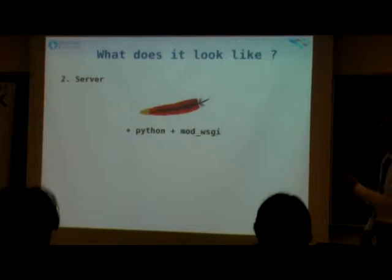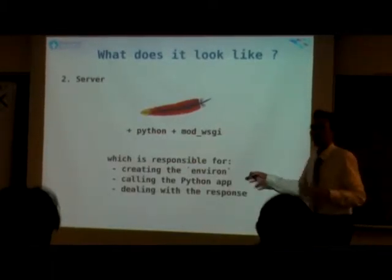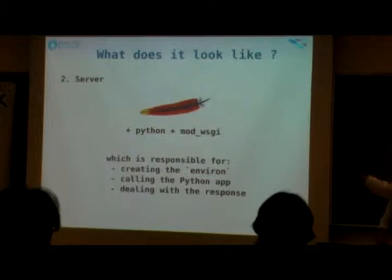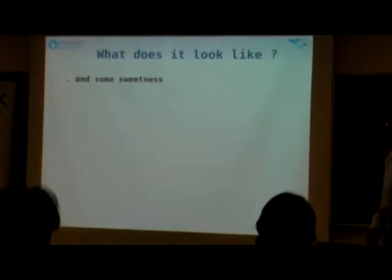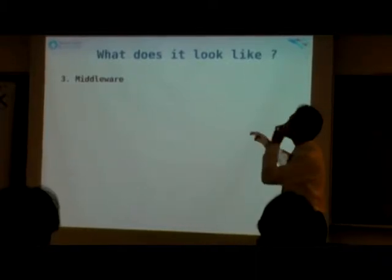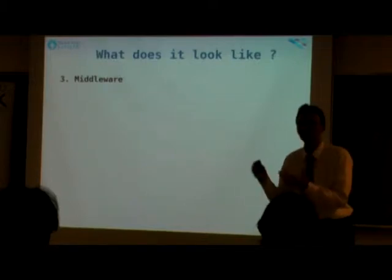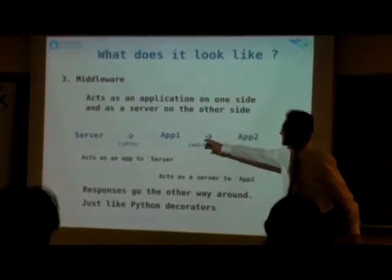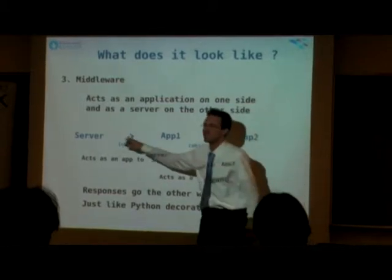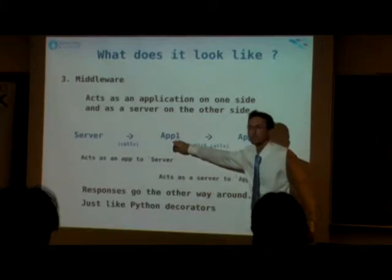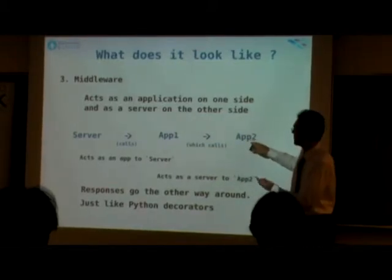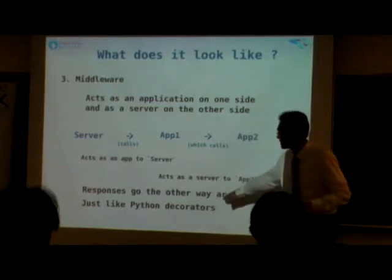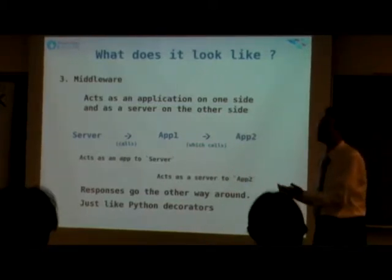Second part: the server, which is responsible for creating that environment and passing it on to the Python application, everything wrapped into good Python code — yielding the response, sending it back through sockets. And some sweetness: middleware. That's the power WSGI gives us — reusability. We can use standard stuff, just like servlets, and plug it into our application. The middleware acts as a server to the inner application and acts as an application to the outer server. It's a bit like a decorator — it can or cannot call the inner app. It can handle things like slash-DAV in the web server. It can act before, after, or by mangling the response.